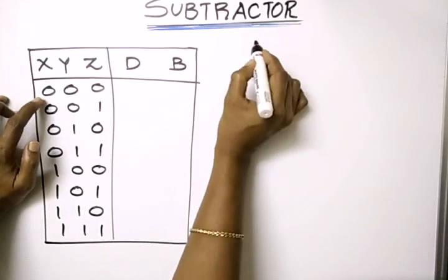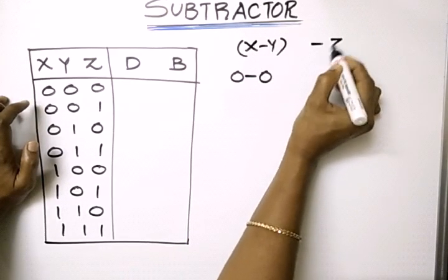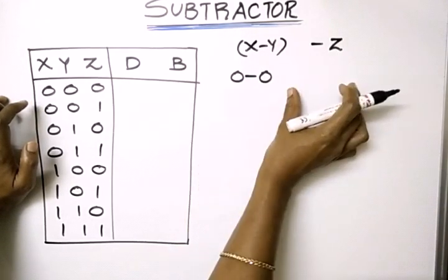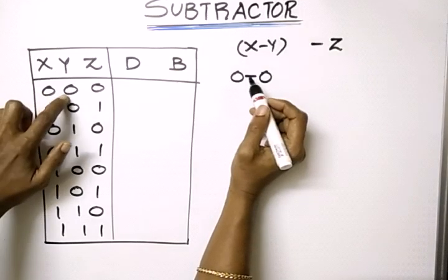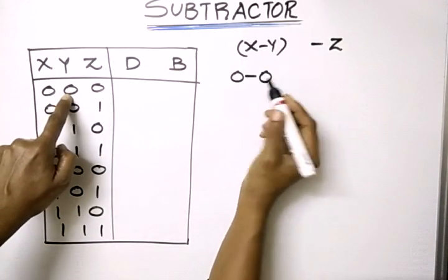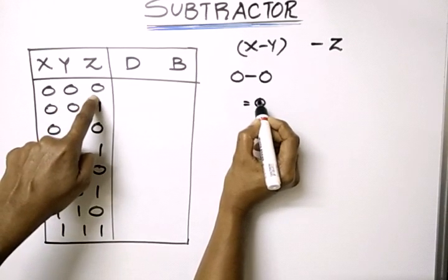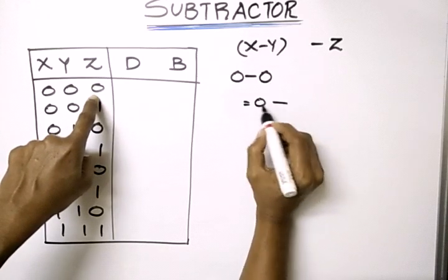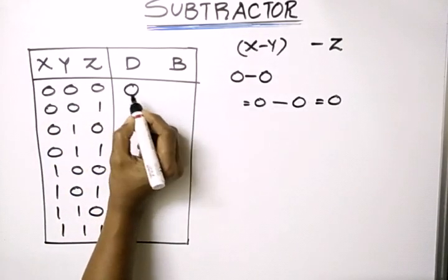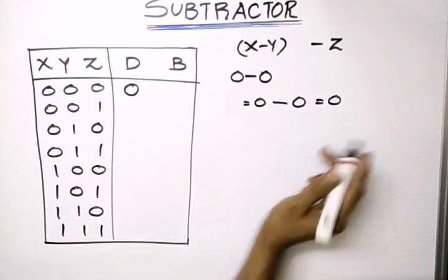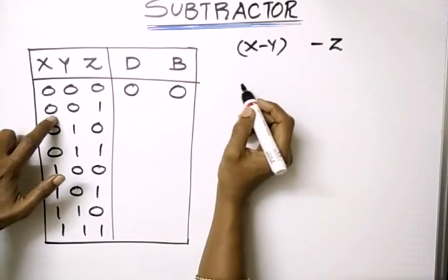We subtract X minus Y, then subtract Z from the result. For the first combination, 0 minus 0 minus 0: 0 minus 0 is 0, then 0 minus Z is 0 minus 0, which equals 0. So difference is 0 and we didn't take any borrow, so borrow is also 0.